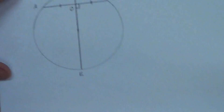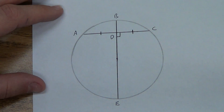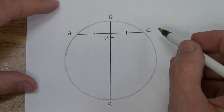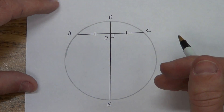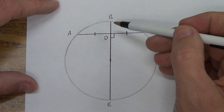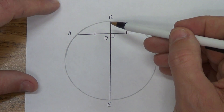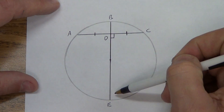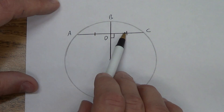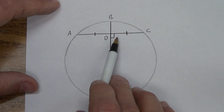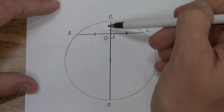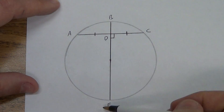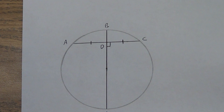Theorem 10.4 is one we're going to use in some compass work in another video. If one chord is the perpendicular bisector of another chord, then the first chord is a diameter. You can see this chord is perpendicular and bisecting — if you're told this, then the chord doing the bisecting is a diameter. So BE is a diameter. If they give you a picture like this, you can automatically say BE is a diameter.